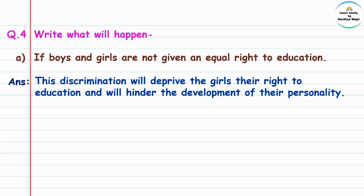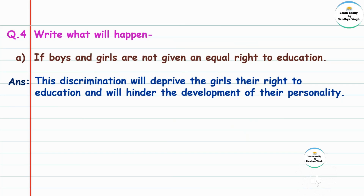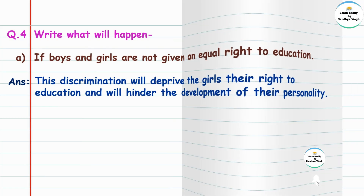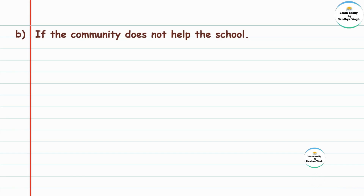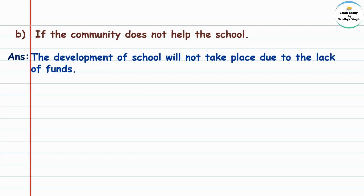(c) What happens if boys and girls are not given an equal right to education? This discrimination will deprive the girls of the right to education and will hinder the development of their personality. Discrimination means bheedbhav, deprive means vanchit thhevone. If the community does not help the school, the development of the school will not take place due to the lack of funds.